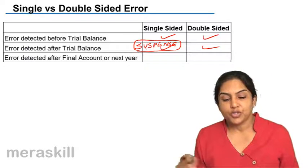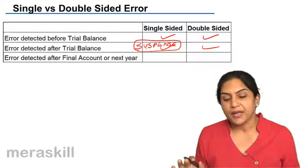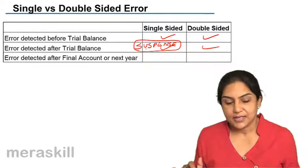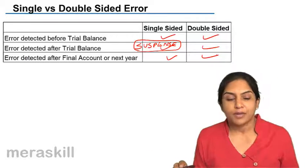Errors may also be detected not in the current year at all - after final accounts are prepared, maybe in the next year. Such errors also may be single-sided or double-sided.